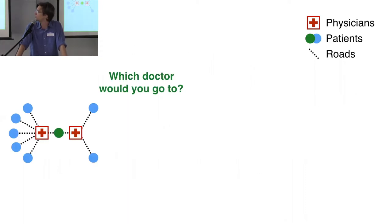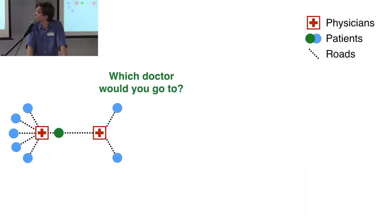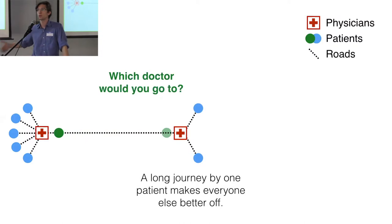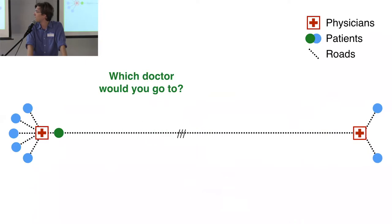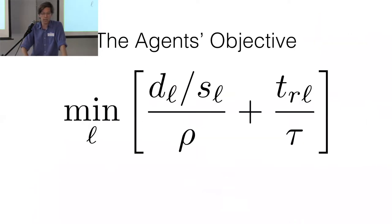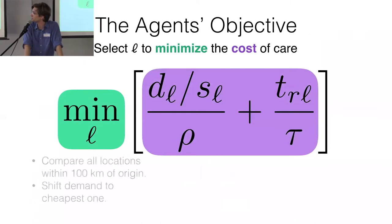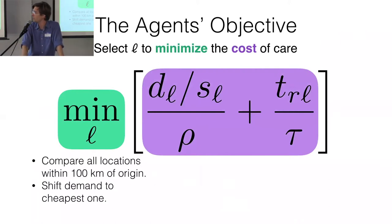So we want to do better on all these counts — larger OD matrices in terms of scope, granularity, and number of modes, and a model that incorporates those modes, home and work locations, and competition between destinations. The basic intuition: if you're the green patient choosing a doctor, you'd go to the one on the right because they have fewer patients. If they're a little further away you might still go; if far enough away you give up and go home.